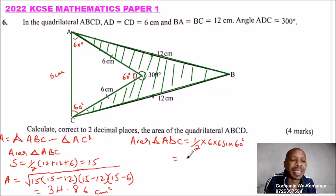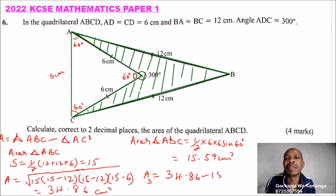So area shaded, area is equal to, area shaded is equal to, the area of the big triangle, which is 34.86, you minus 15.59, and when you do that, you'll be able to get, it is 19.27.